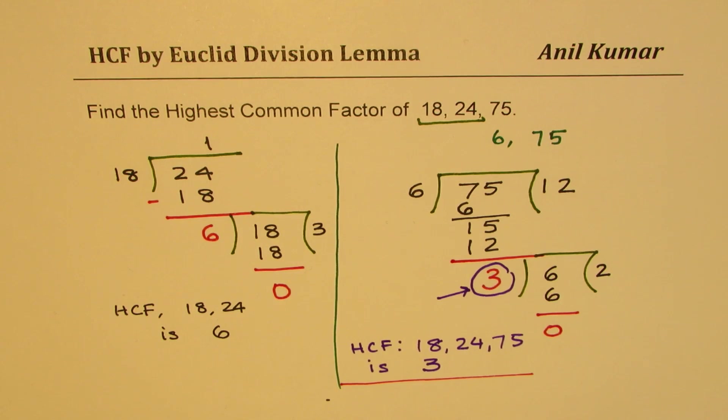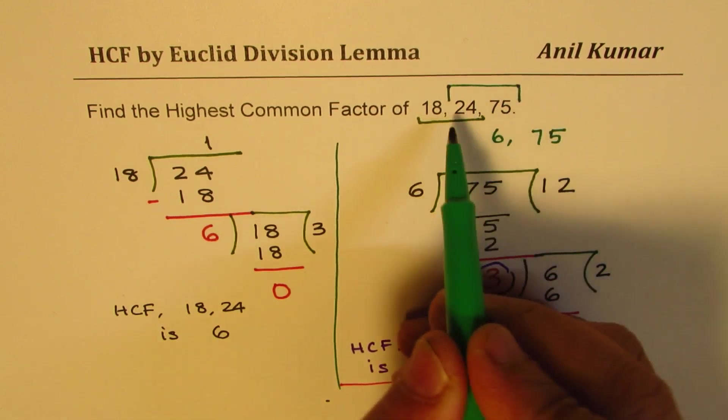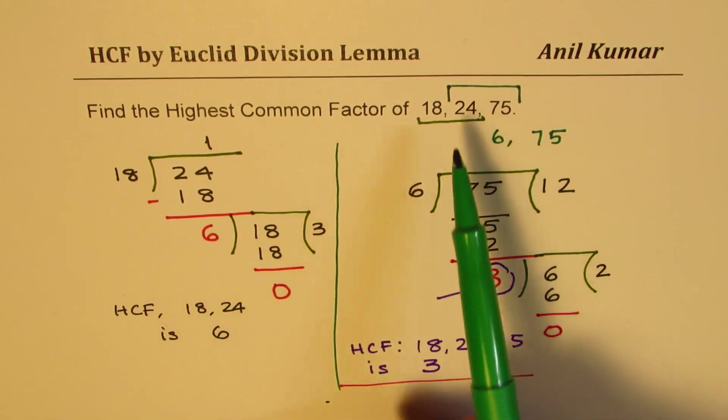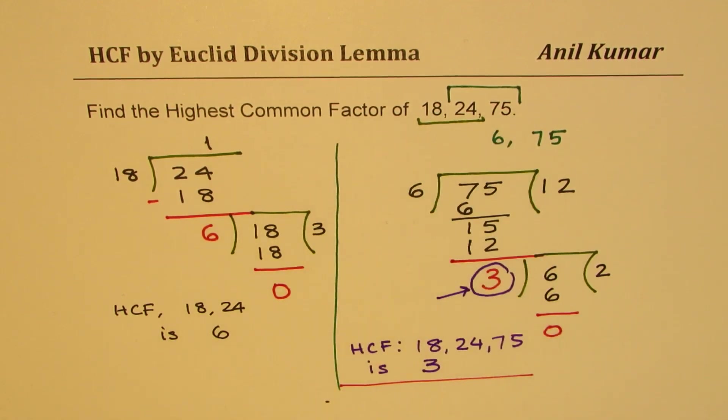So I hope now the steps are clear. The idea is you could start with any two numbers. So you try out using these two numbers first and then whatever you get, find the highest common factor between that number and 18. Any two numbers can be picked. You will always get the same result.